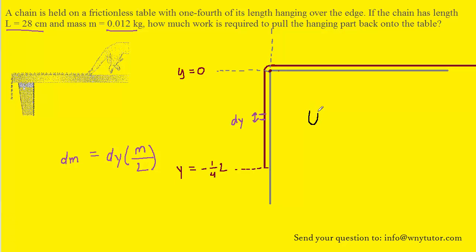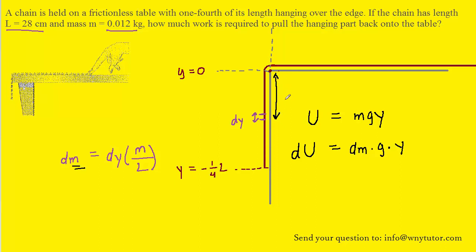The gravitational potential energy of an object equals its mass multiplied by g multiplied by a height above some reference point. For our infinitesimal segment of the chain, its potential energy would be du — a very tiny amount of potential energy. That equals dm times g times the distance of our little segment from the reference point. We notice that distance is actually below the reference point, so it is represented by negative y. Rather than y in the equation, we use negative y.